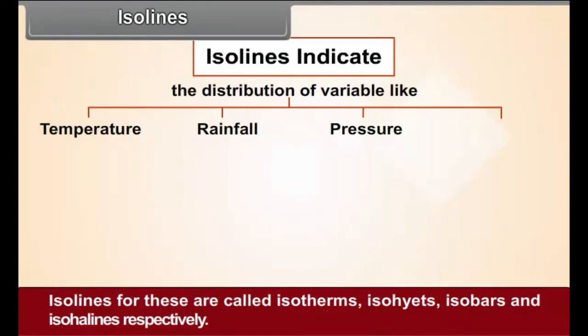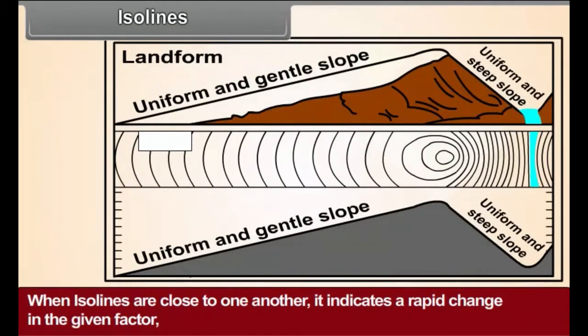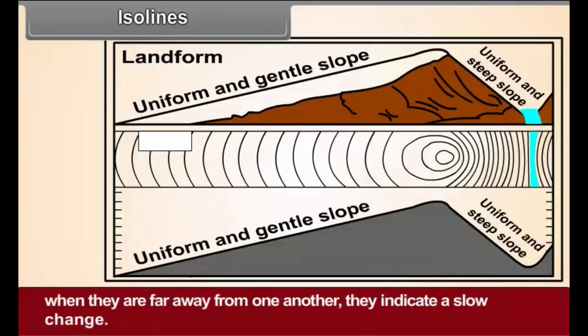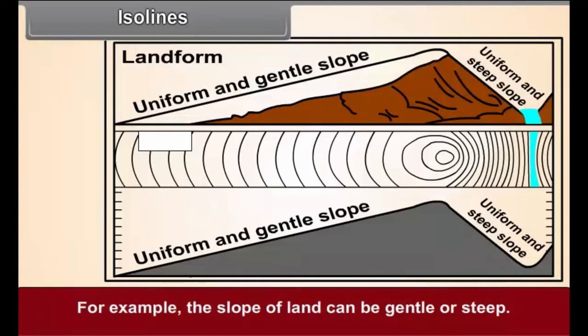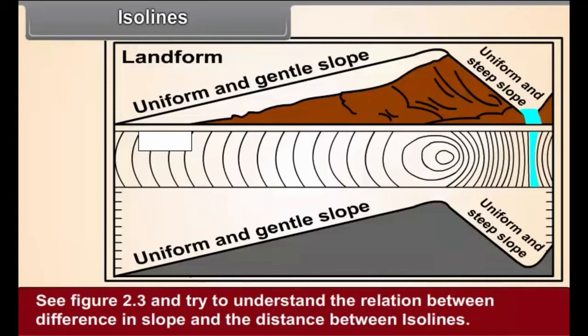When isolines are close to one another, it indicates a rapid change in the given factor. When they are far away from one another, they indicate a slow change. For example, the slope of land can be gentle or steep. See figure 2.3 and try to understand the relation between difference in slope and the distances between isolines.